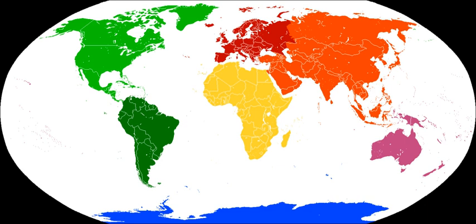The European and African mainlands are non-contiguous, and the delineation between these continents is thus merely a question of which islands are to be associated with which continent. At its nearest point, Morocco and the European portion of Spain are separated by only 13 km. The Portuguese Atlantic island possession of the Azores is 1,368 km from Europe and 1,507 km from Africa, and is usually grouped with Europe if grouped with any continent.